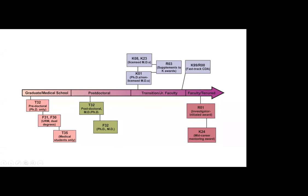If you are a more senior postdoc or are thinking about transitioning in your career, you might also think about applying for K awards. We'll talk briefly about the different types of K awards. The one K award that is the most difficult to actually obtain funding for is the K99-R00, which we commonly refer to as the kangaroo.